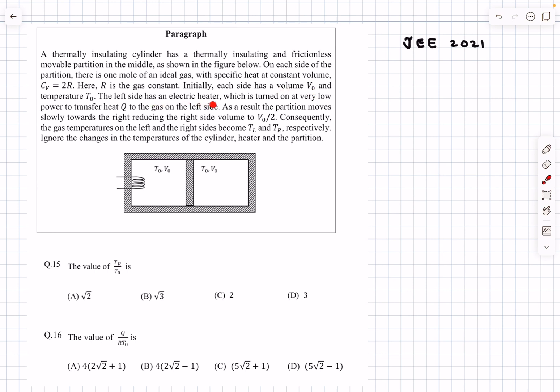The left side has an electric heater which is turned on at very low power to transfer heat Q to the gas on the left side. As a result the partition moves slowly towards the right reducing the right side volume to V0/2.